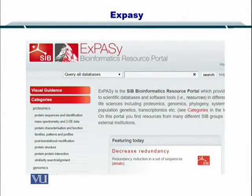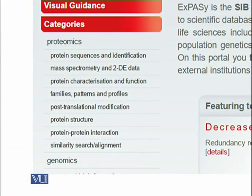I have clicked on the proteomics tab to give you an example of this category. Proteomics is a category in which proteins are analyzed and the tools associated with these proteins are provided. As I was just telling you, you have protein sequences and identification here. You have mass spec, which is used to sequence proteins. Then you have protein characterization and functional analysis. You may also want to look at the families, the patterns and profiles, or the post-translational modifications. Below this, you have protein structure and protein-protein interaction, and of course, similarity search or alignment. This alignment is a pairwise sequence alignment for proteins or a global sequence alignment for multiple proteins. All of these tools are available within the proteomics category.